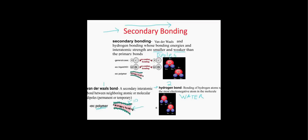We can see that the partially positive hydrogen interacts with the slightly negative oxygen of the other molecule and forms a bond — not as strong as a primary bond, but stronger than other van der Waals interactions. The strength of hydrogen bonds accounts for the interesting properties of water, such as its high surface tension and high boiling point. Other elements that could be bonded to hydrogen to form hydrogen bonds include nitrogen or fluorine.